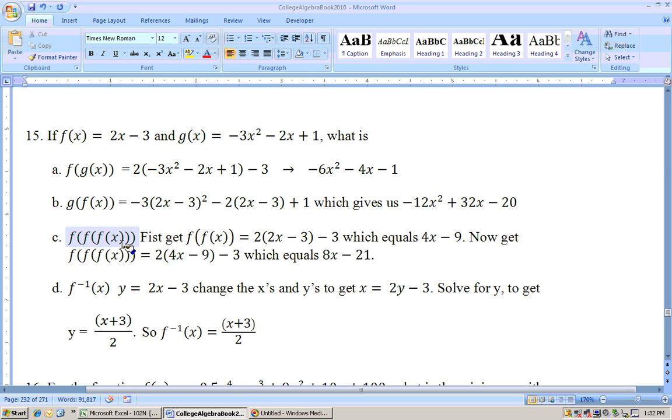Okay, f(f(f(x))), or some people may say f raised to the third of x. Well, first what you need to do is get f(f(x)). f(f(x)) means substitute the function back into itself, so it would be 2 times the quantity (2x - 3) - 3. If you simplify this, you get 4x - 9.